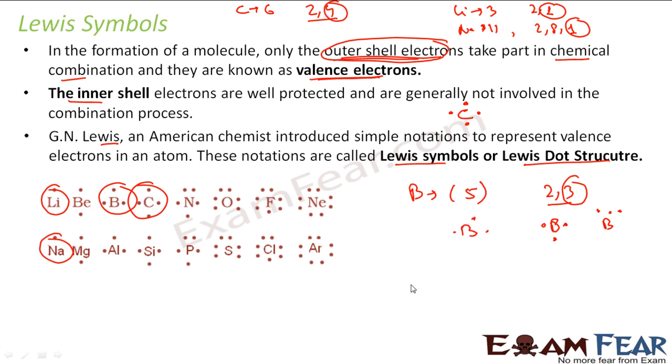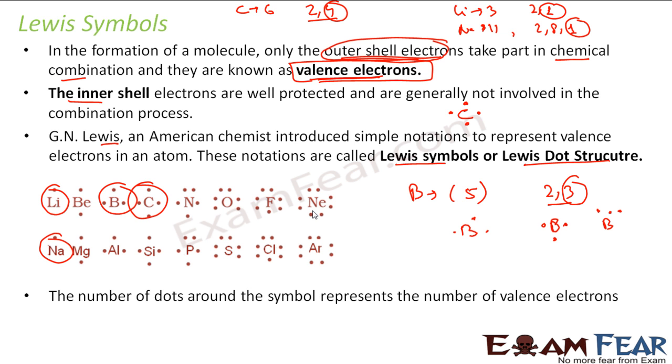The way it works is you just write the name of the compound, find the electronic configuration, find the valence electrons, and put the number of dots. Each dot represents one valence electron. So the number of dots around the symbol represents the number of valence electrons.